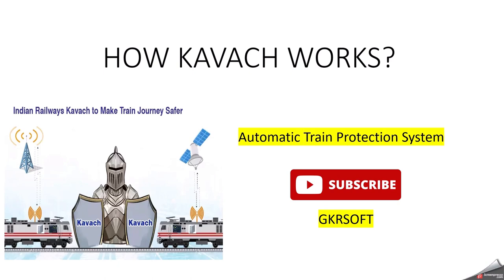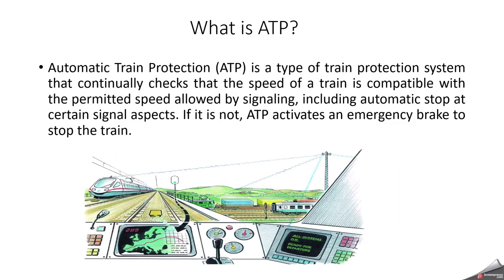Once implemented, Kawach will be the world's cheapest automatic train collision protection system, costing 50 lakh rupees per kilometer to operate, compared to about 2 crore rupees worldwide. Automatic Train Protection means this system automatically protects the train. It is a type of train protection system that continuously checks whether the speed of the train is compatible with the permitted speed allowed by signaling.